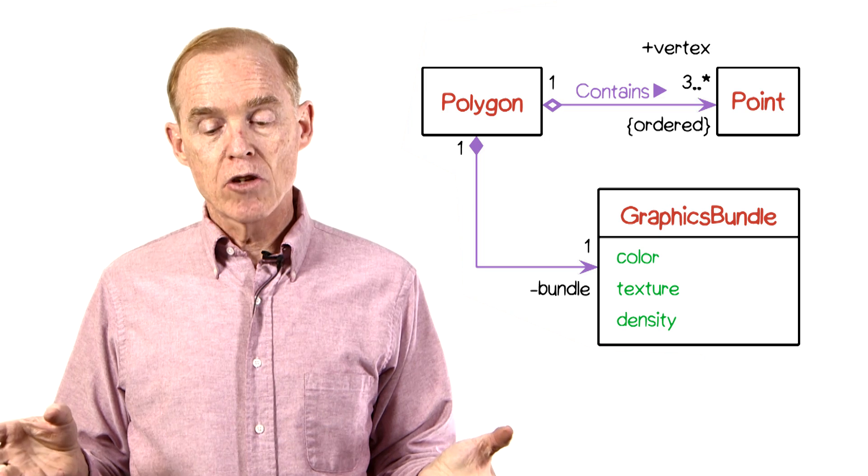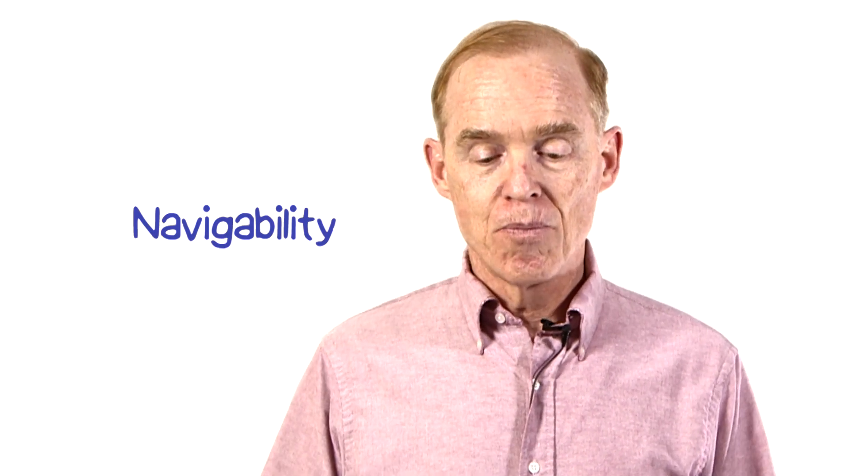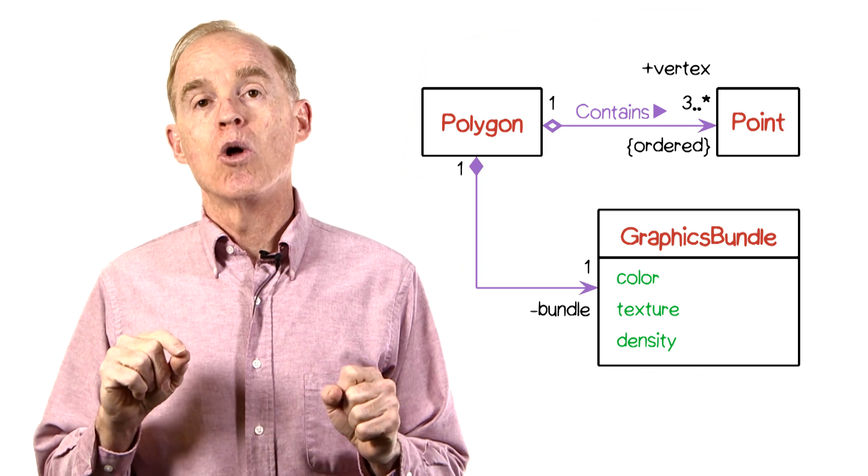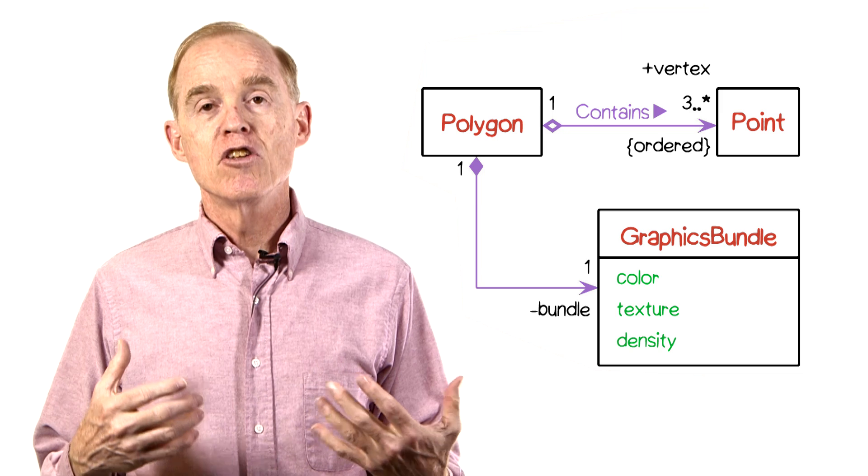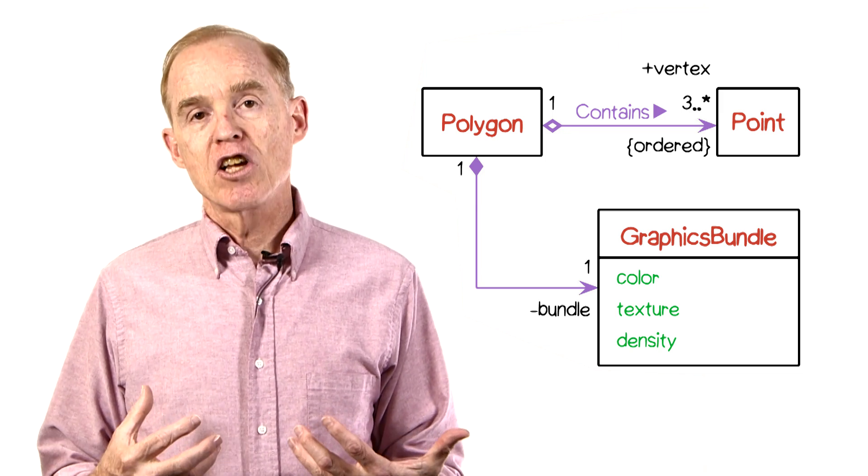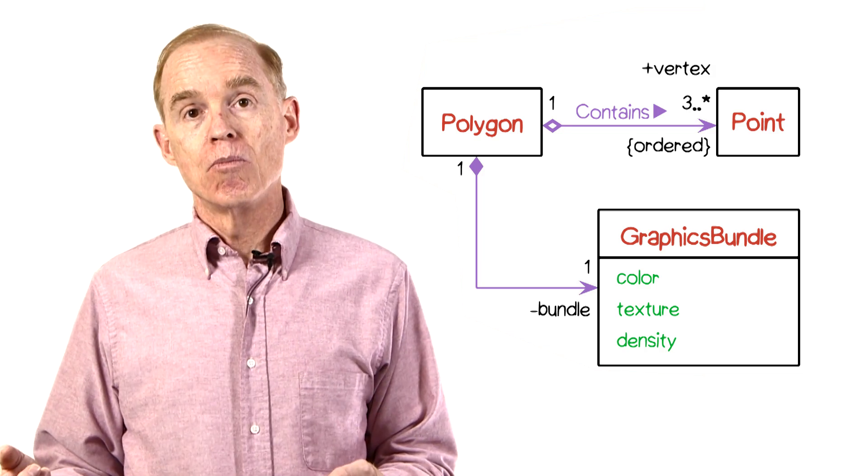We saw reading direction, that was the filled triangle. We can also express navigability, which is the appearance of an arrowhead on one end of, or both ends of, the association line. This indicates that the primary access pattern for those classes is in the direction of the arrow. That is, we're going to be going normally from polygons to their points and not in the other direction.